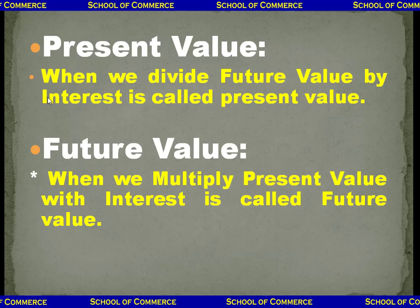One MCQ always comes in the exam: what is the difference between present value and future value? The answer is interest — for interest the differentiation is made. So when we divide future value by interest, that is called present value. We can also make the definition of discounting or factoring from this same structure.